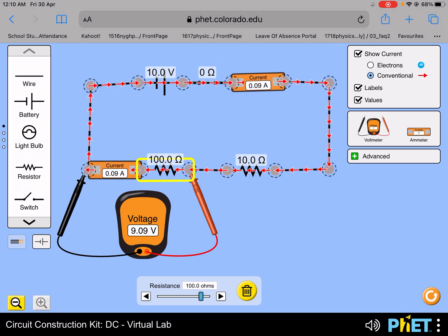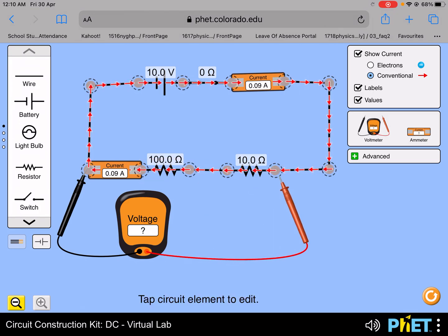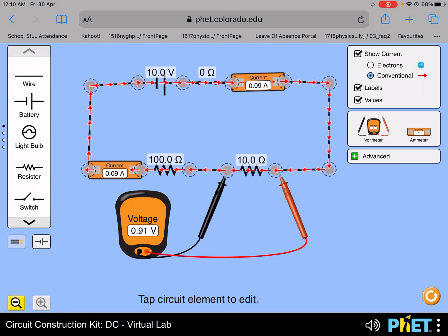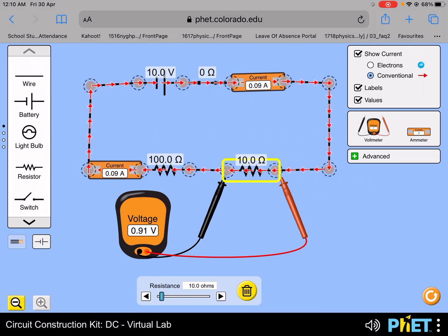Now I will compare the resistances. The fixed resistor is 10 ohms and the rheostat resistance is 100 ohms, which is 10 times. What about the potential difference across the 10 ohm resistance? It's 0.91 volts. For the 100 ohm resistance, the PD is about 9.1 volts, which is 10 times that across the other resistor.